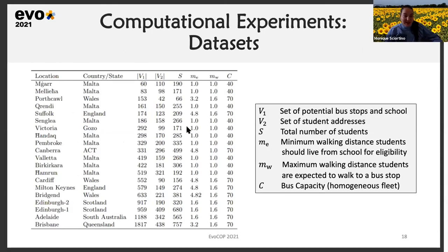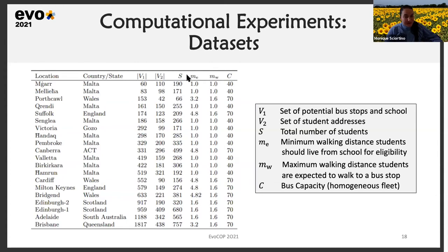Moving on to the computational experiments: we performed experiments on a total of 20 instances, 10 pertaining to Malta and the other 10 to the UK and Australia. The 10 UK and Australia instances were extracted from another publication. The table shows the number of bus stops including the school, the number of addresses, the total number of students S, the minimum eligibility distance ME, the maximum walking distance MW (both in kilometers), and the bus capacity C — either 40 or 70 depending on the location, assuming a homogenous fleet.